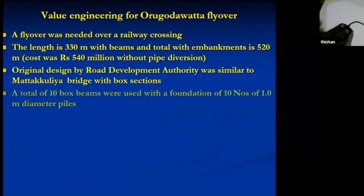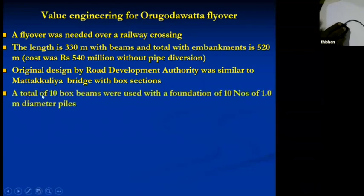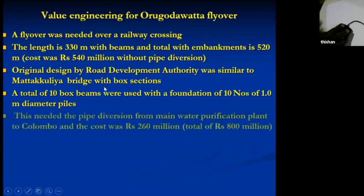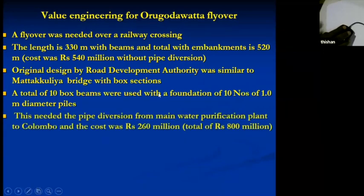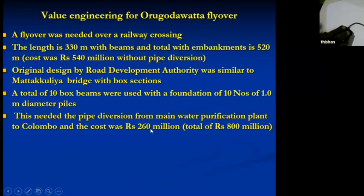The original design had 10 box beams as per the Matakkoliya bridge, and the foundation was 10 piles of 1 meter diameter. This needed pipe diversion costing 260 million. So the total cost of the project was 800 million. Value engineering was initiated by the Chinese contractor.